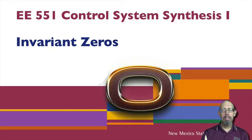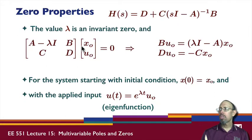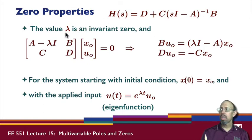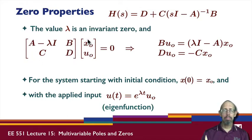Now we're going to look more in-depth into this idea of an invariant zero. Given a transfer function, or really a state-space model, the value lambda is an invariant zero if there's a non-trivial right null space of this matrix. That is, there's a vector x0, u0, such that when I multiply by this matrix, I get zero.